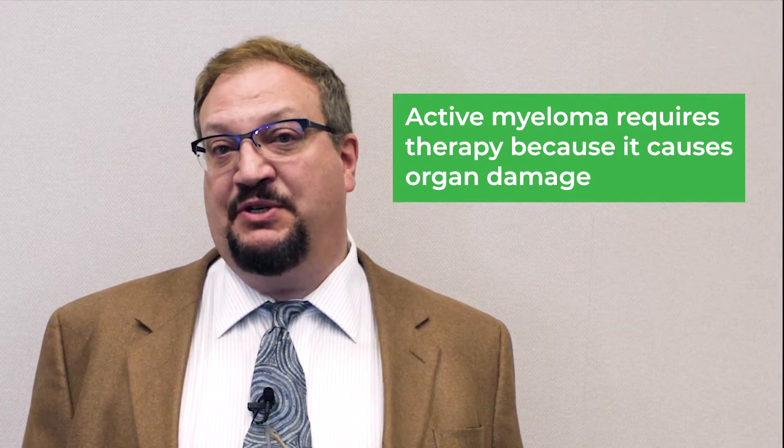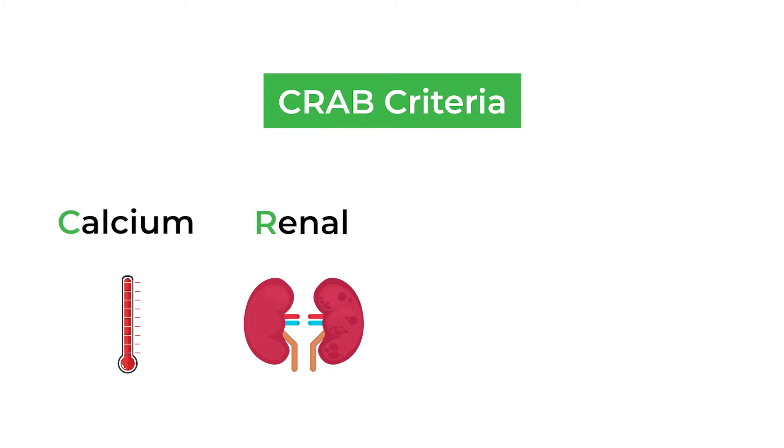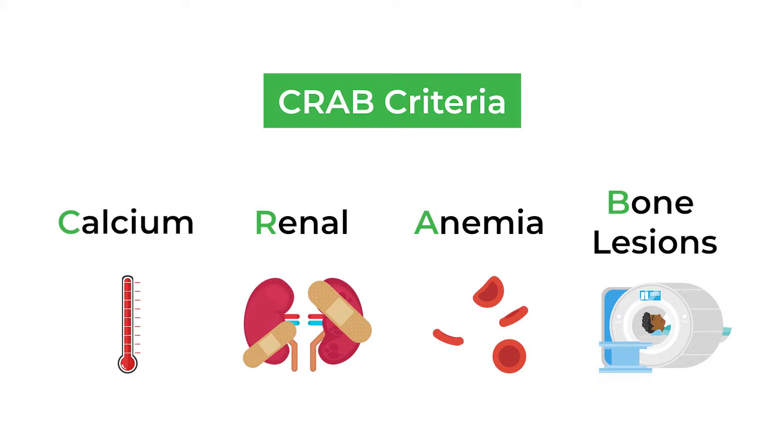Active myeloma is myeloma that requires therapy because we're seeing evidence of damage to the organs. There are four major things we look for — what we call the CRAB criteria: high Calcium, Renal problems (kidney problems), Anemia, and Bone lesions. When patients meet the criteria for active myeloma, we start them on chemotherapy of some sort. There's another related disorder, very rare, called primary amyloidosis.